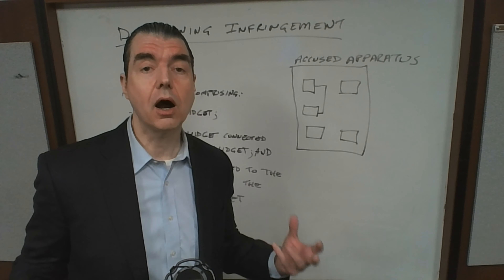In order to prove infringement of that claim, each one of these limitations has to be found. So let's take a look at this example. Is there a first widget? Let's say we get this apparatus, we take it apart, and we see it has the first widget. We've got the first limitation in the accused device, so that's heading in the right direction.